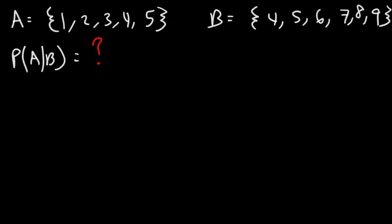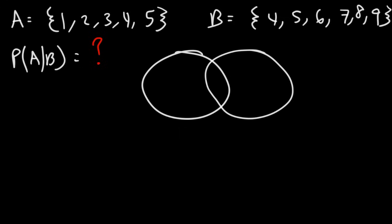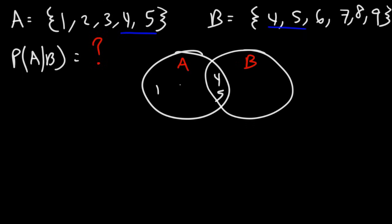Now I'm going to create a Venn diagram. The first circle is for event A, the second one is for B. A and B have two numbers in common: 4 and 5 — that's the intersection of A and B. A also has the numbers 1, 2, and 3. B has the numbers 6, 7, 8, and 9.